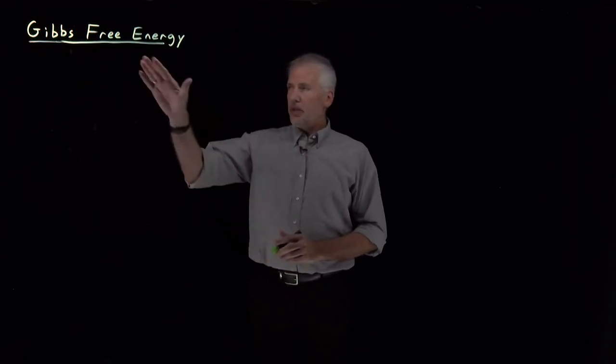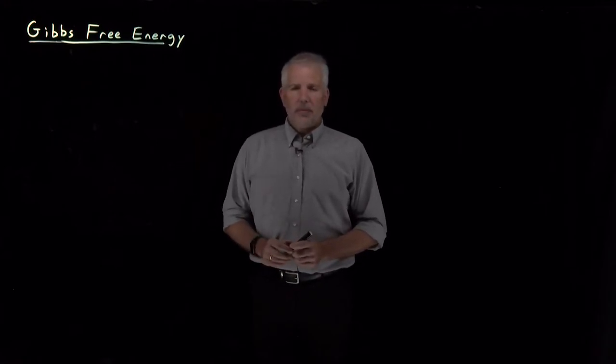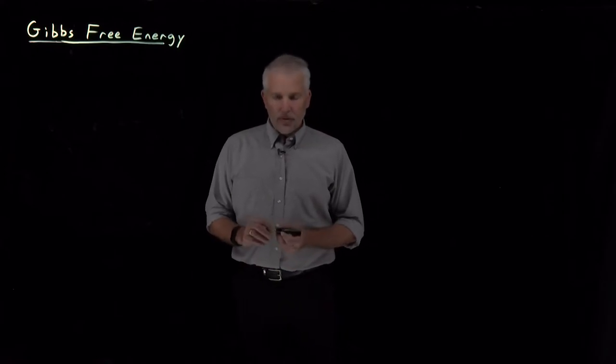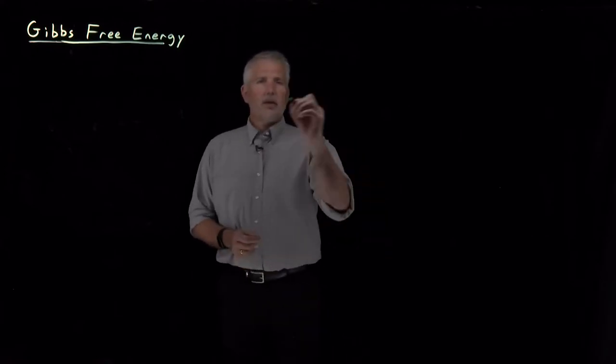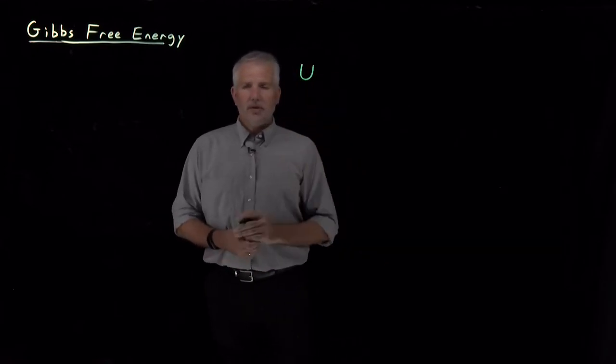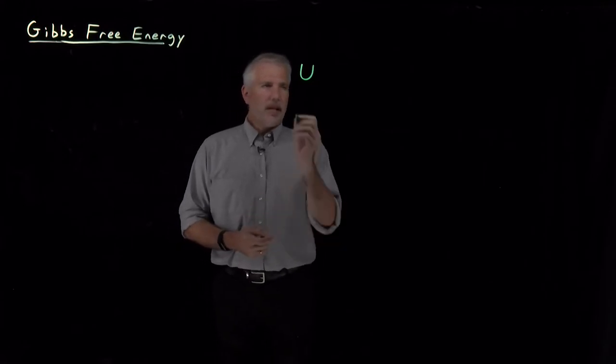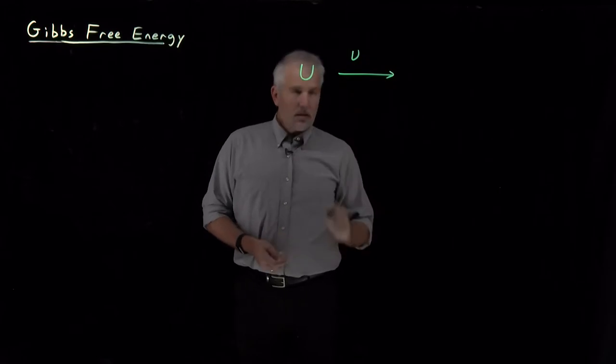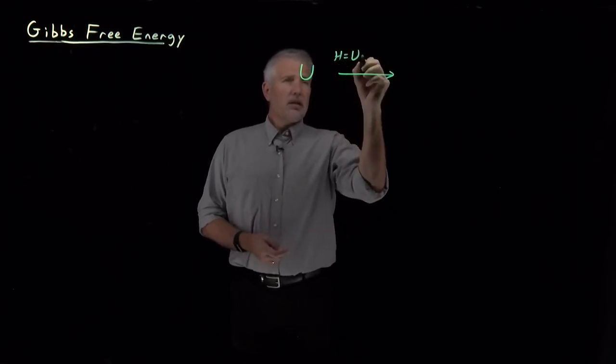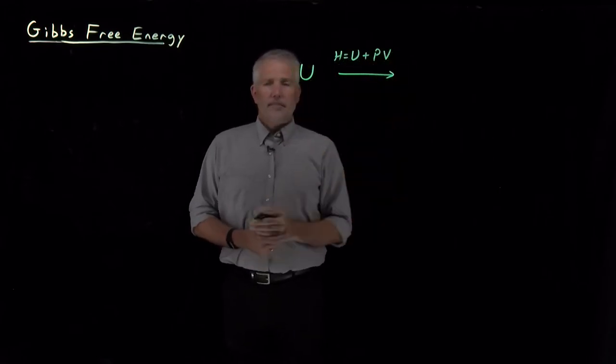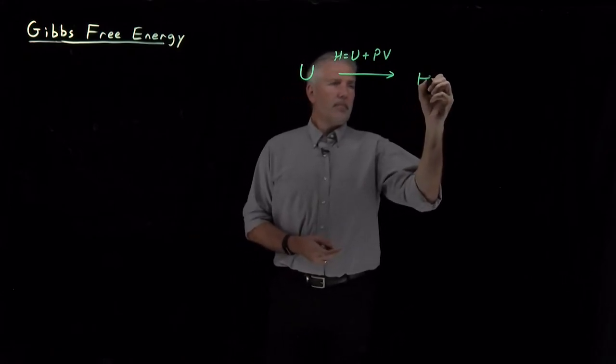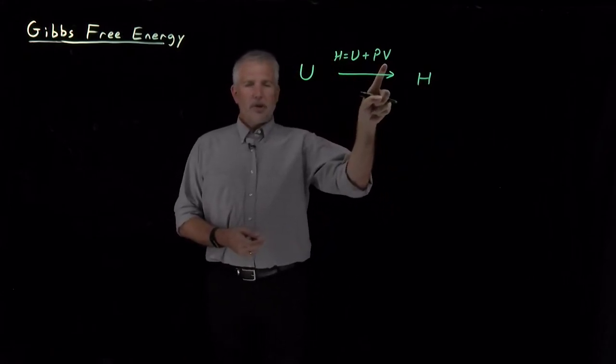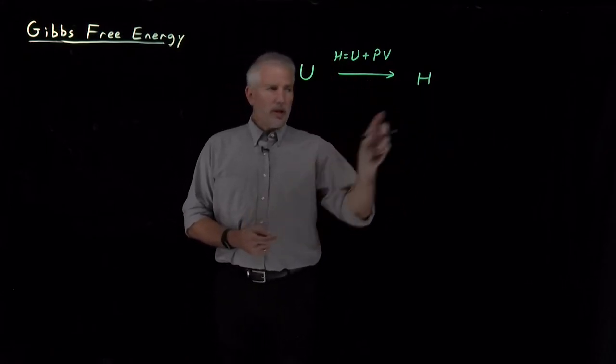To see how the Gibbs energy comes about, let's recap what we know about the flavors of energy we've seen so far. Notably, we have the internal energy U. And if we define the enthalpy as the energy plus PV, we've defined a new quantity called the enthalpy.